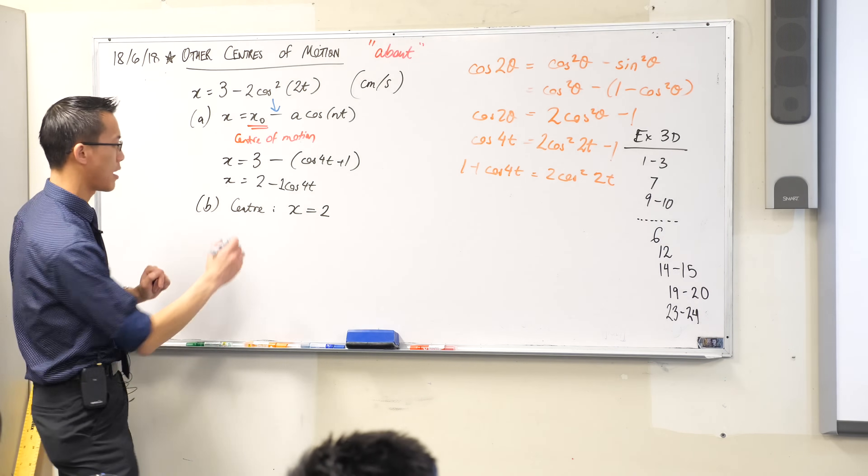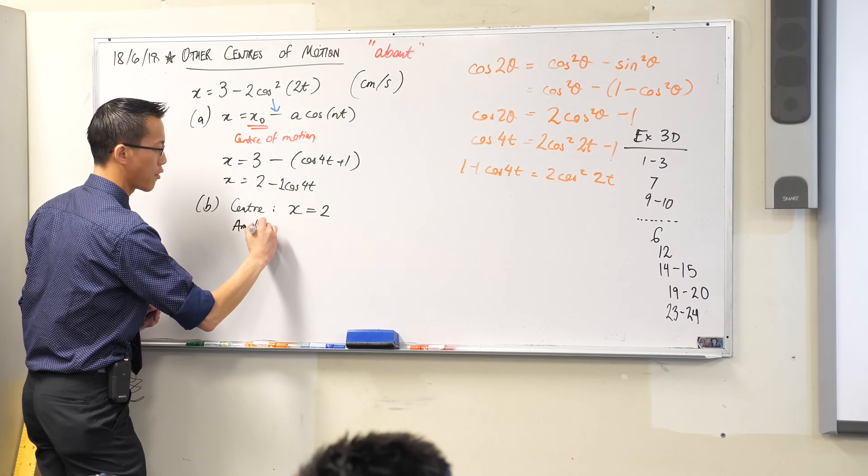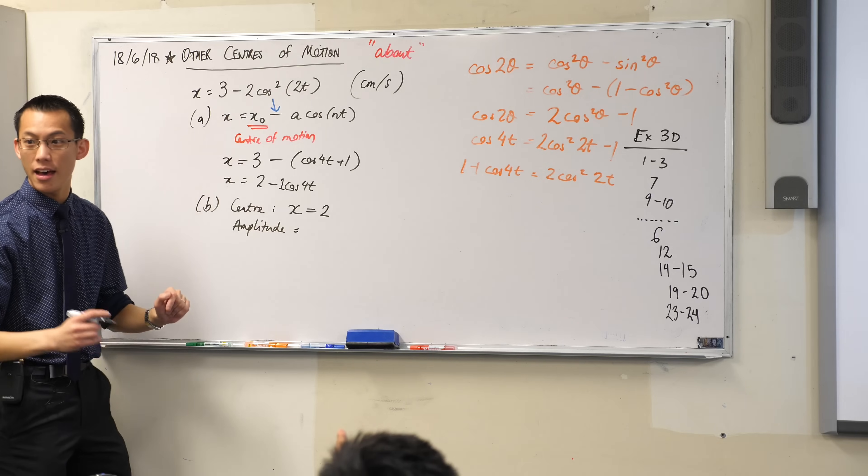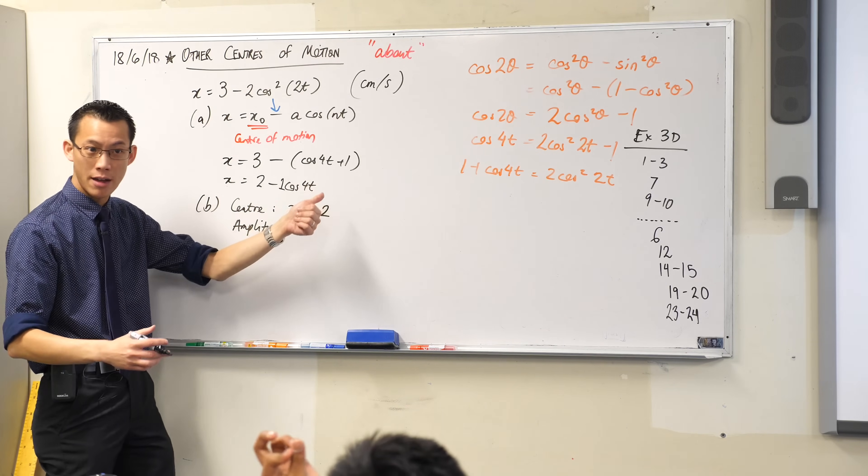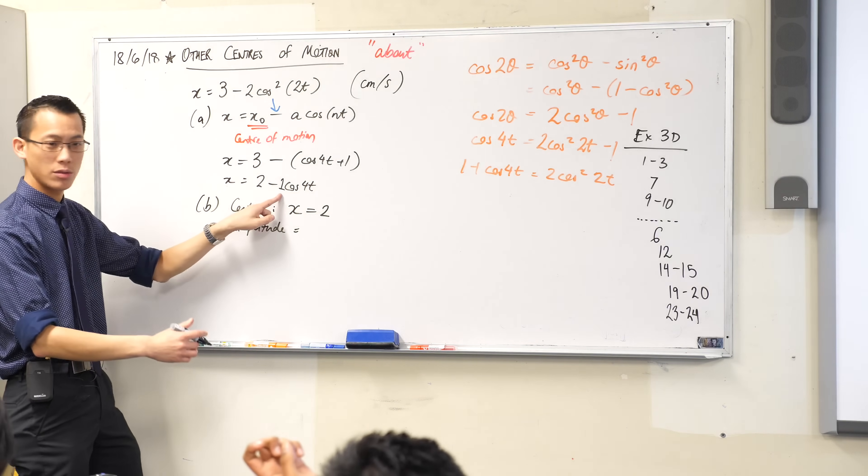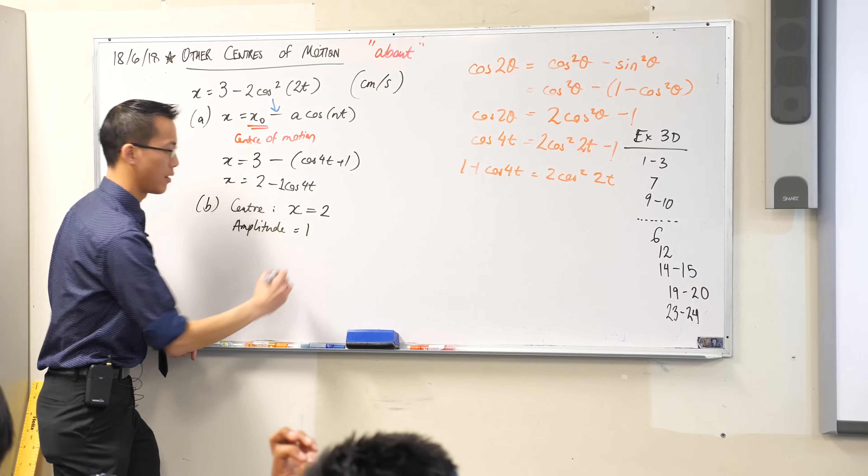What were the other things I'm after? Amplitude, very good. Where do we read that from? That's the coefficient of the trig function, right? Which was a, which in our case was just 1. It's 1.